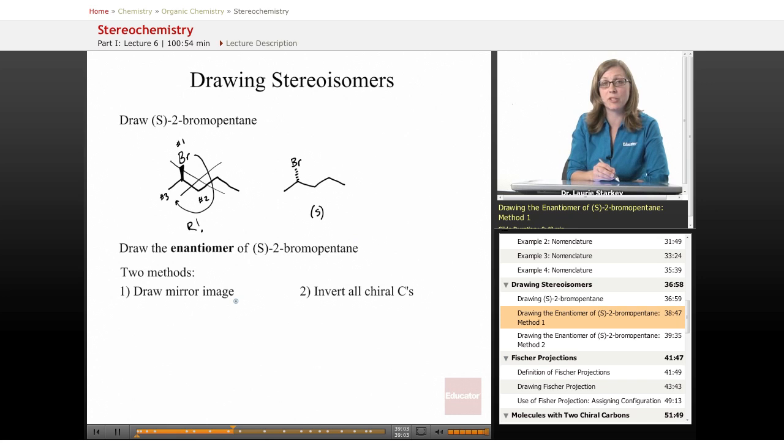One approach is we could draw the mirror image because we know the definition of an enantiomer is that they're mirror images of each other. So we can imagine a mirror to the side or to the bottom and maybe we could draw it like this and draw the bromine here. This would be the mirror image of this if I had a mirror right here or if I had a mirror right here, you could see it. And so that should be the enantiomer. That's one possible way to do it.